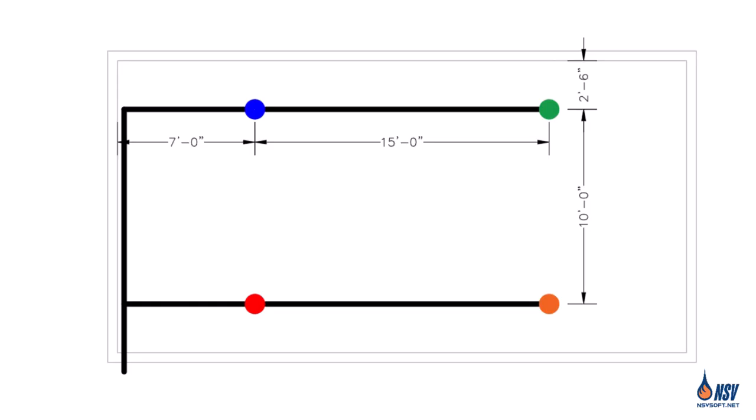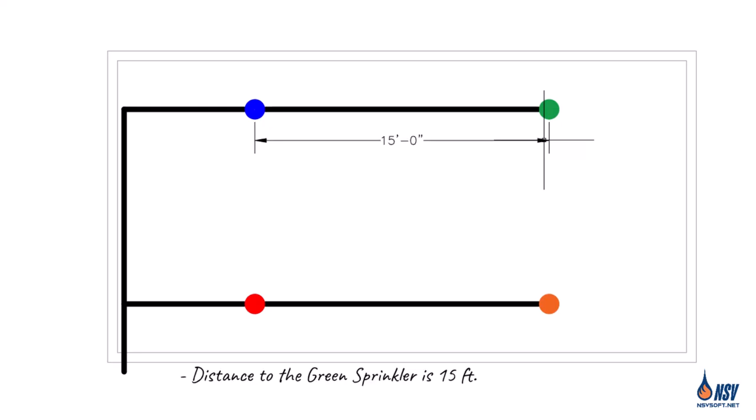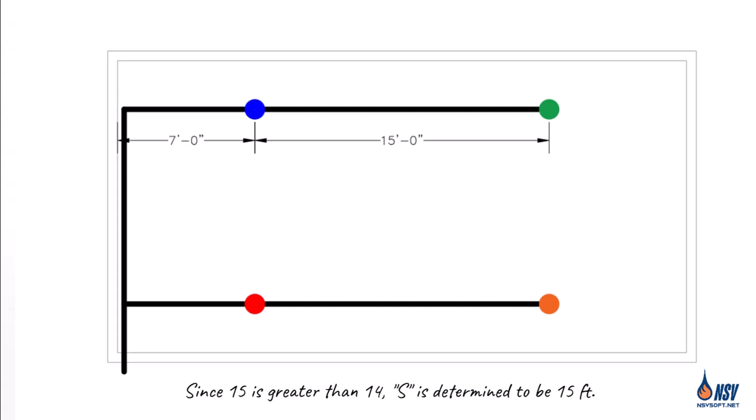Let's see how we can apply the S by L method to determine the coverage of the blue sprinkler in this figure. To calculate S for the blue sprinkler, we need to compare two distances. The distance to the adjacent green sprinkler is 15 feet. Twice the distance to the left wall is 14 feet. Since S is defined as the larger of these two values, we select 15 feet as the spacing S for the blue sprinkler.